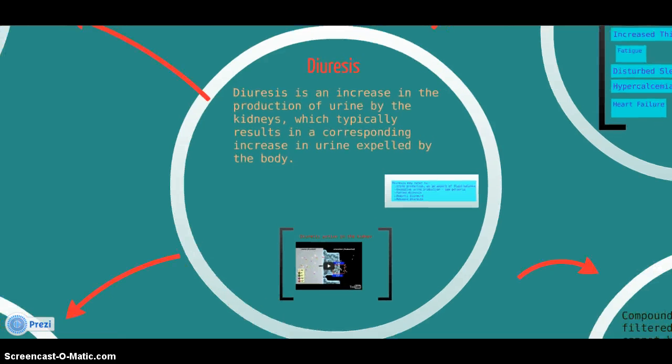Diuresis. Diuresis is an increase in the production of urine by the kidneys, which typically results in a corresponding increase in urine expelled by the body.